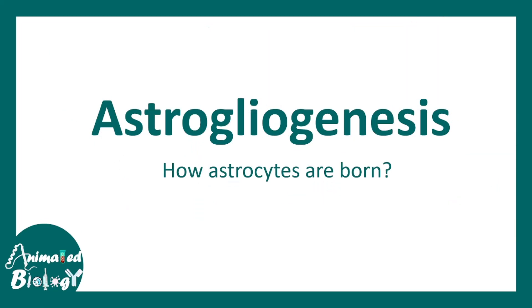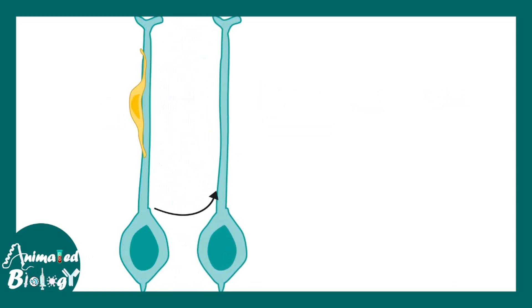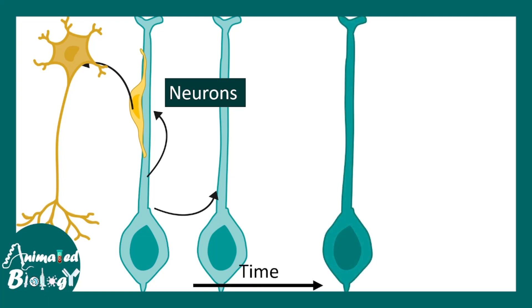In this video we'll be talking more about the astrocyte. Let's talk about astrogliogenesis — that means how astrocytes are born. In the brain, neurogenesis happens from radial glial cell progenitors. Radial glial cell progenitors can divide and give rise to a new radial glia, or give rise to a newborn neuron, but this happens in the very early stage of brain development. As the brain develops more, eventually these neurogenic progenitors, which were supposed to give rise to neurons, switch their fate to a gliogenic progenitor.